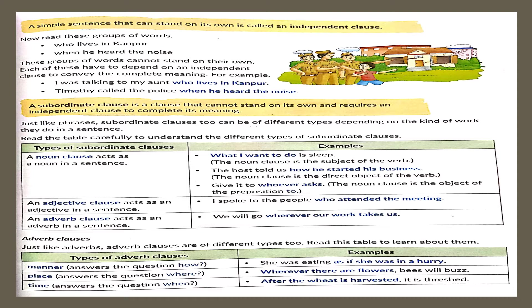Once again, here are the types of subordinate clauses. A clause that serves as a noun is a noun clause — example: what I want to do is sleep. An adjective clause acts as an adjective — example: I spoke to the people who attended the meeting. An adverb clause acts as an adverb — example: we will go wherever our work takes us. Adverb clauses can be divided into adverb clauses of manner, place, and time, answering the questions how, where, and when respectively.